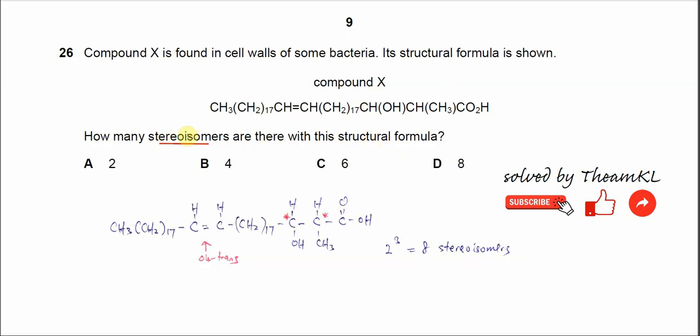Stereoisomers, there are two types. One is the geometrical isomers, means cis-trans. Another one is the optical isomers. Let's check how many stereoisomers it has.